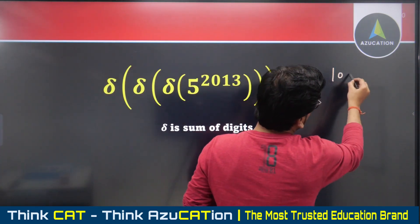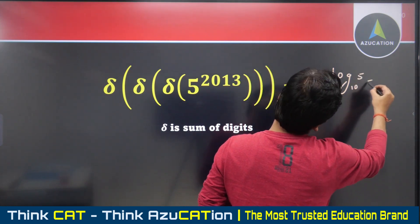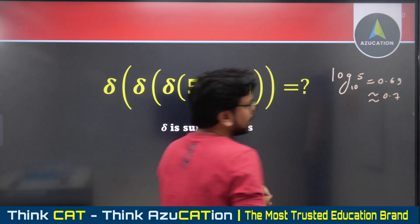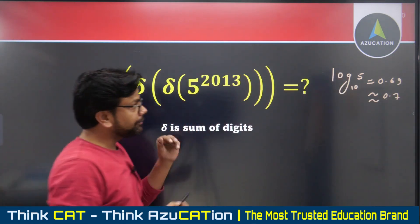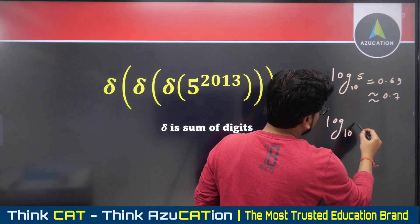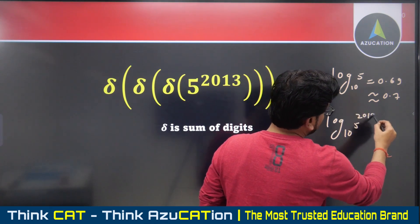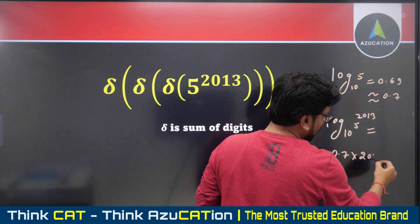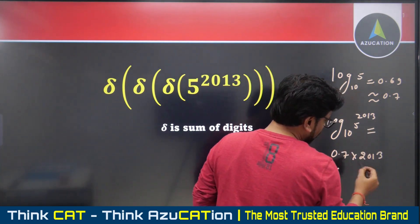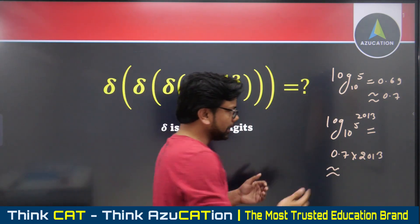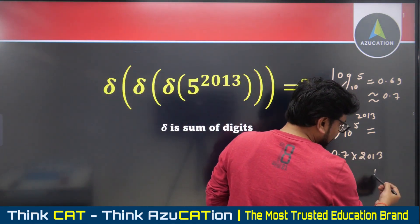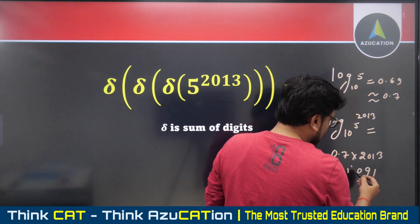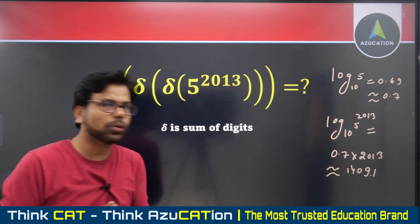We know log base ten of five is approximately 0.7. So log of 5^2013 is approximately 0.7 times 2013. This gives approximately 1409.